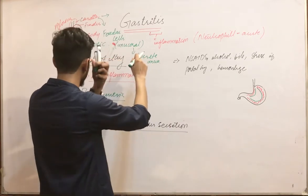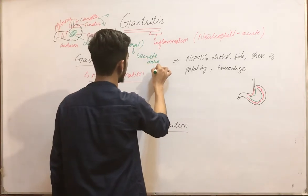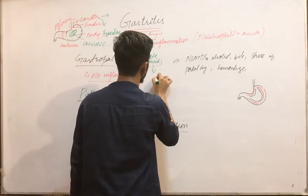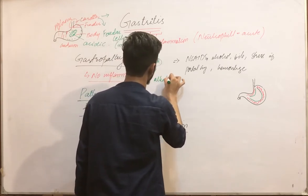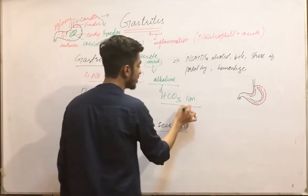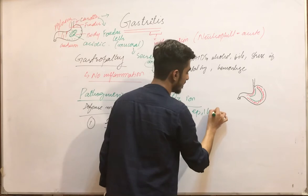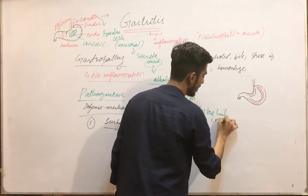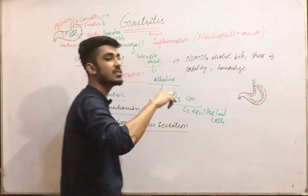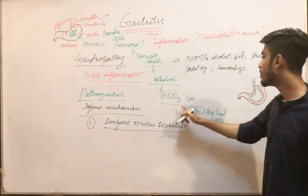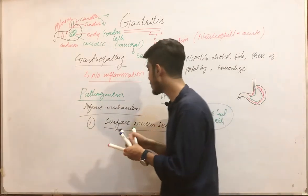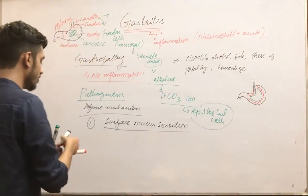This mucus is alkaline itself because of bicarbonate ion secretion by the epithelial cells. So the first defense mechanism is the surface mucous secretion, which is alkaline due to bicarbonate ions.